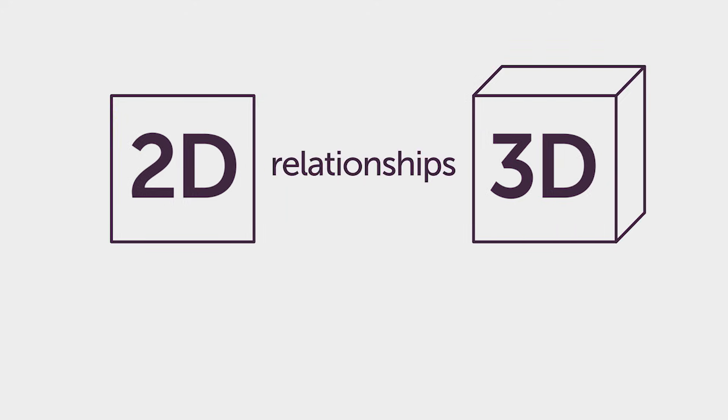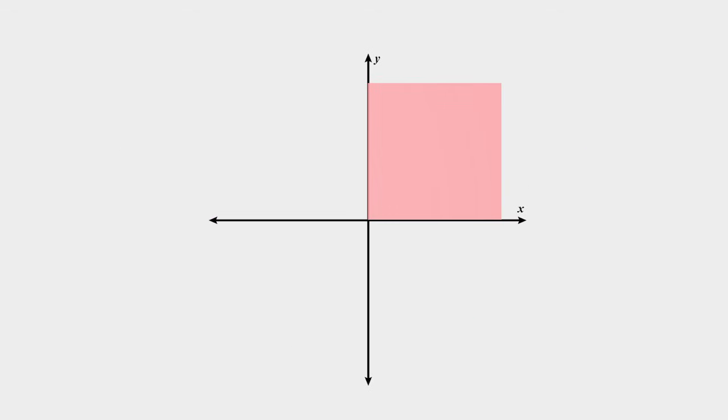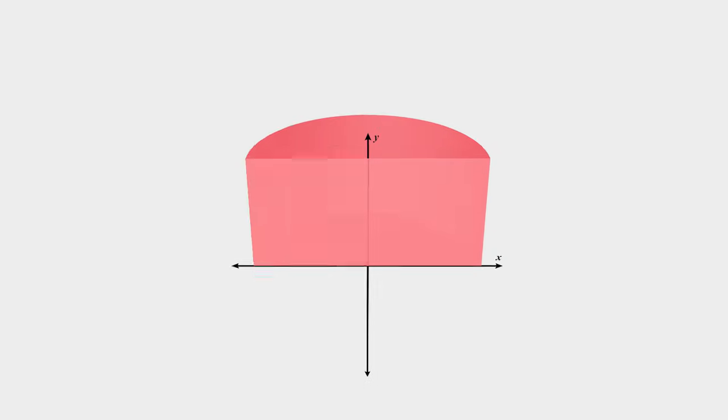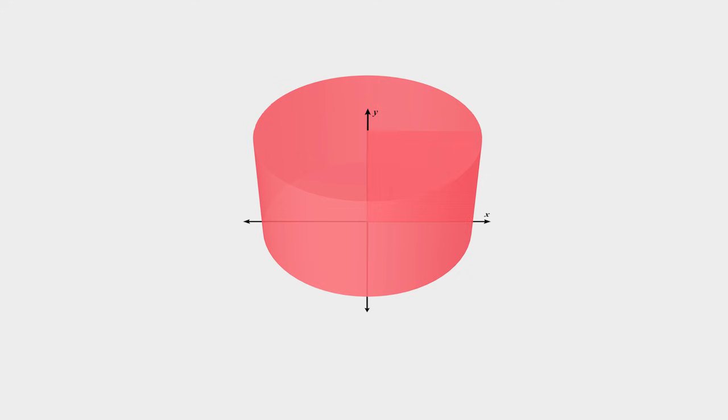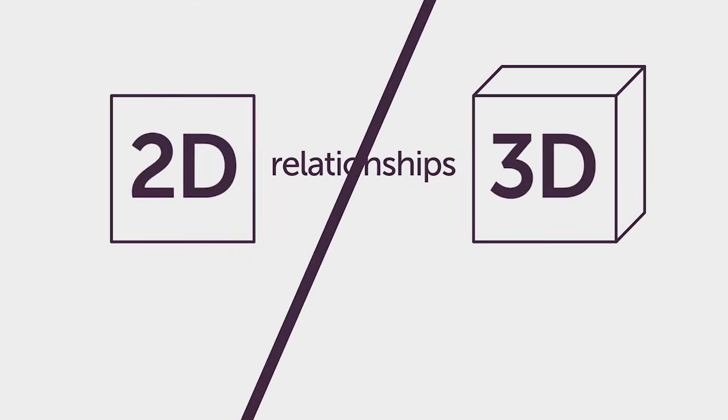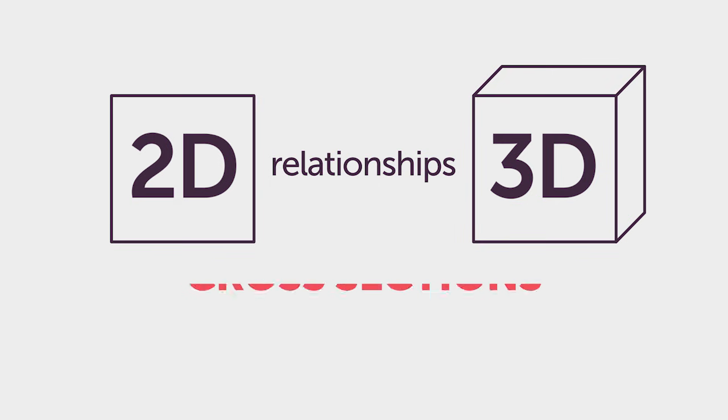One relationship is the rotation of a 2D shape. Rotating a two-dimensional shape around an axis will create a three-dimensional figure. For instance, if you are given a square and you rotate the square about the y-axis, or vertical axis, you will create a cylinder. Another relationship between two-dimensional shapes and three-dimensional figures is cross sections.